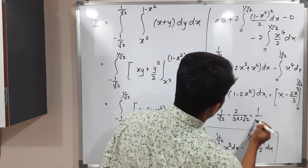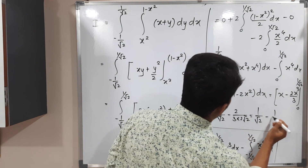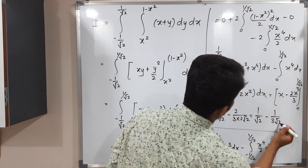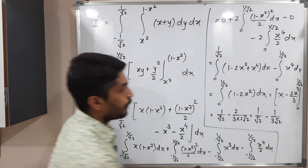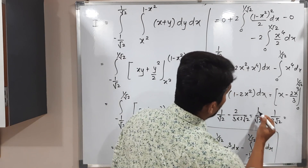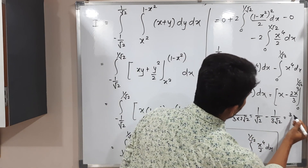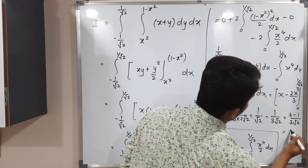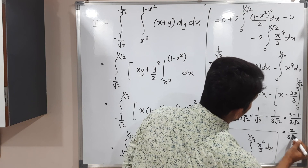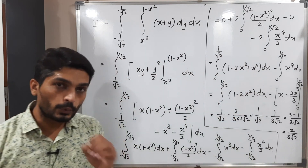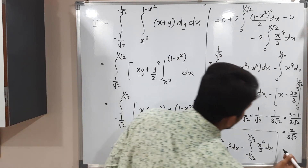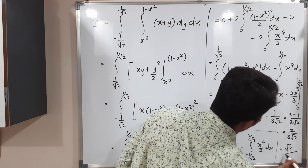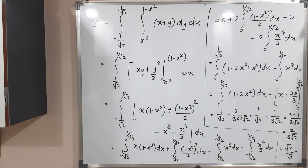Making a common denominator: 3/(3√2) − 1/(3√2) = 2/(3√2). Rationalizing: 2/(3√2) = (2√2)/(3·2) = √2/3. So the final answer is √2/3.